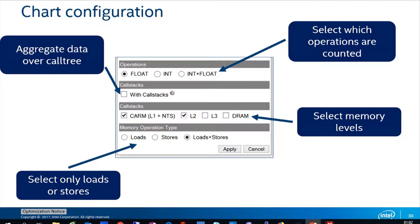You can configure roofline to show different things. For compute operations, you can choose between float and integer operations depending on which kernel you have. You can choose to show roofline with call stacks — this is important when a hot loop executes in different call chains with different characteristics; you probably want to see it as separate dots rather than an aggregated one. You can also choose which memory traffic to show, since showing all at once may be too dense to be useful, and you can filter to read or write traffic only, or combined.